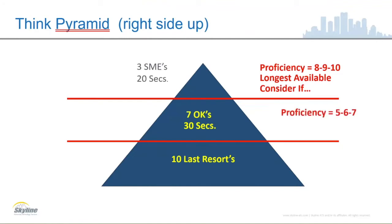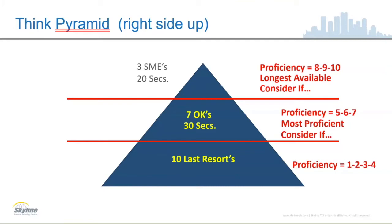Now we're looking at the okays — proficiencies five, six, and seven. Maybe there's enough difference there that we want it to go to the most proficient. We deliver to the fives first; once all the fives are busy, we deliver to the sixes; and when the fives and sixes are busy, we deliver to the sevens. When all of them are busy, that's where we wait the 30 seconds before going to the next level. We can also put a consider-if: if none of those sevens are logged in, don't even wait the 30 seconds — go right down to the last resorts.